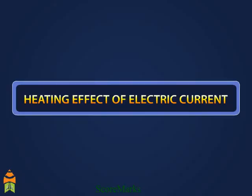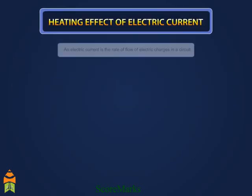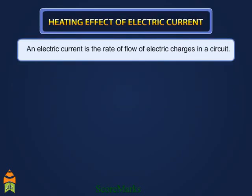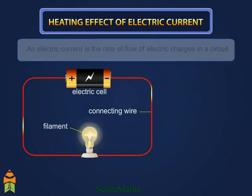Electricity is a form of energy that can easily be changed to other forms. An electric current is the rate of flow of electric charges in the circuit.